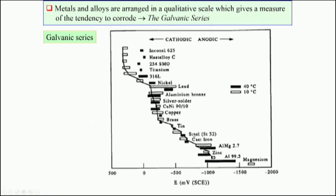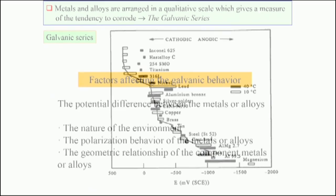But if you couple steel with aluminium bronze or steel with nickel, there will be a lot of galvanic attack and corrosion. Similarly, if you choose zinc and titanium or zinc and stainless steel, there will be a lot of galvanic attack. Whenever you choose material combinations, this galvanic series plays a very important role and acts as a guideline for the choice of materials combination for a specific purpose.